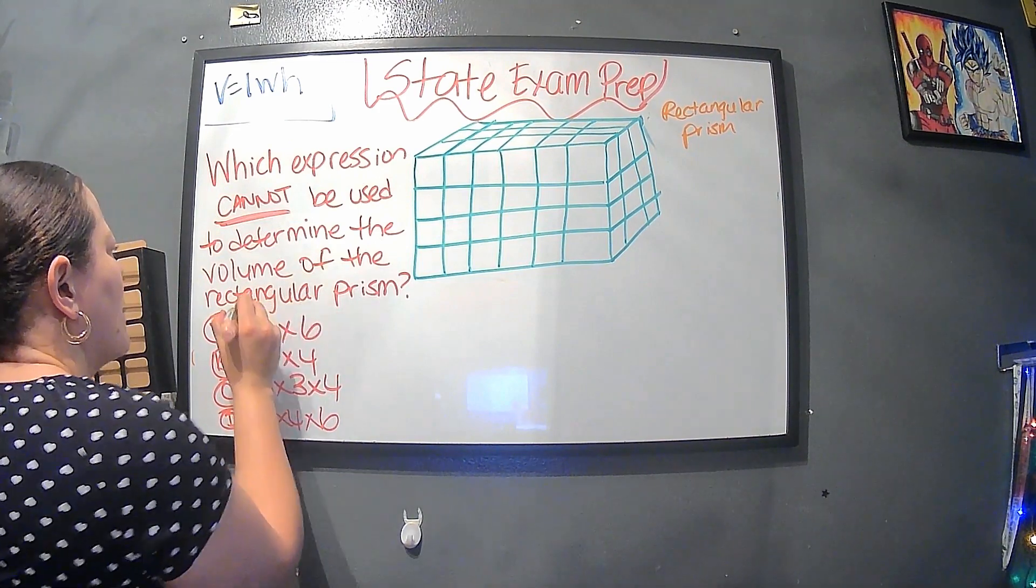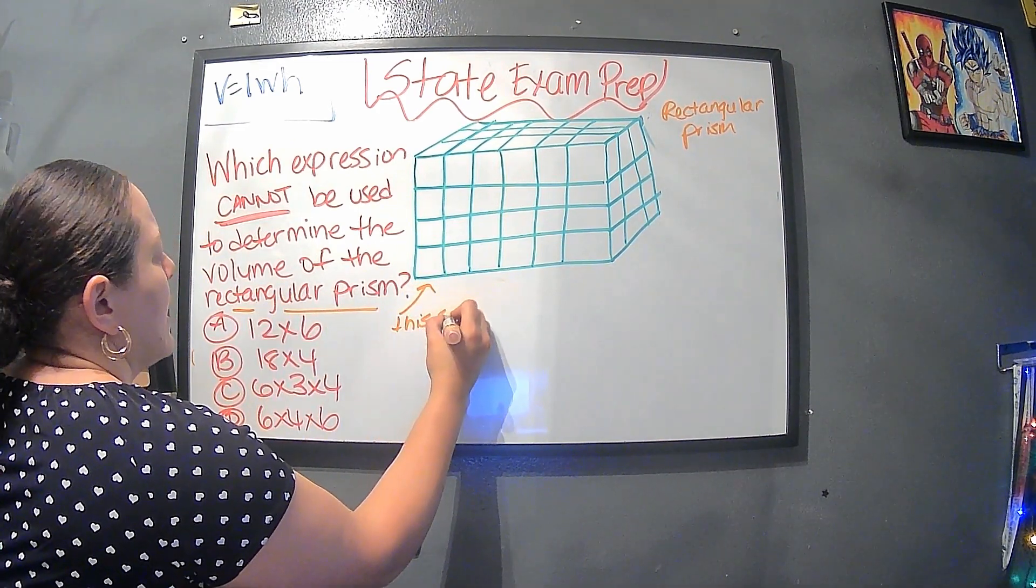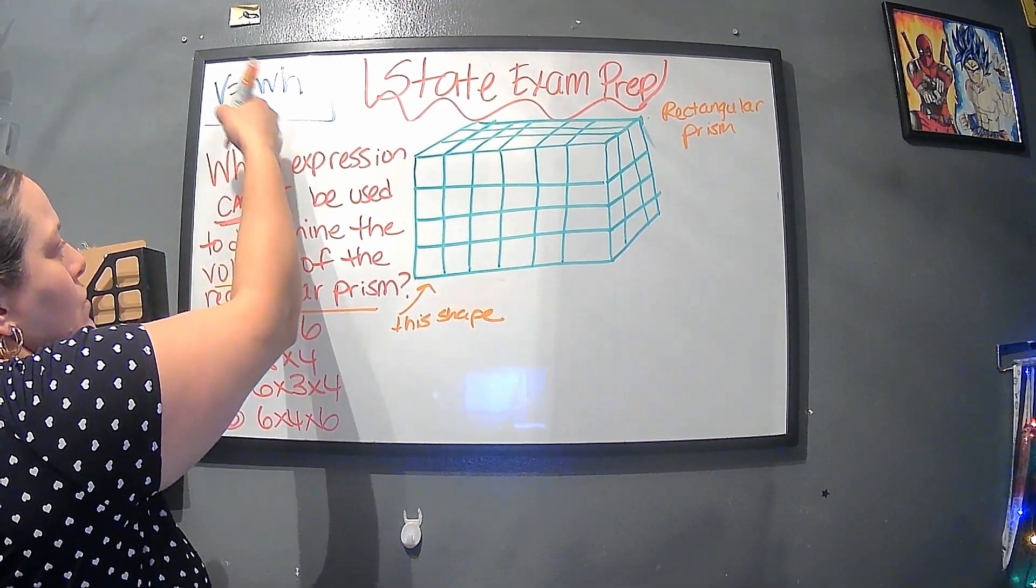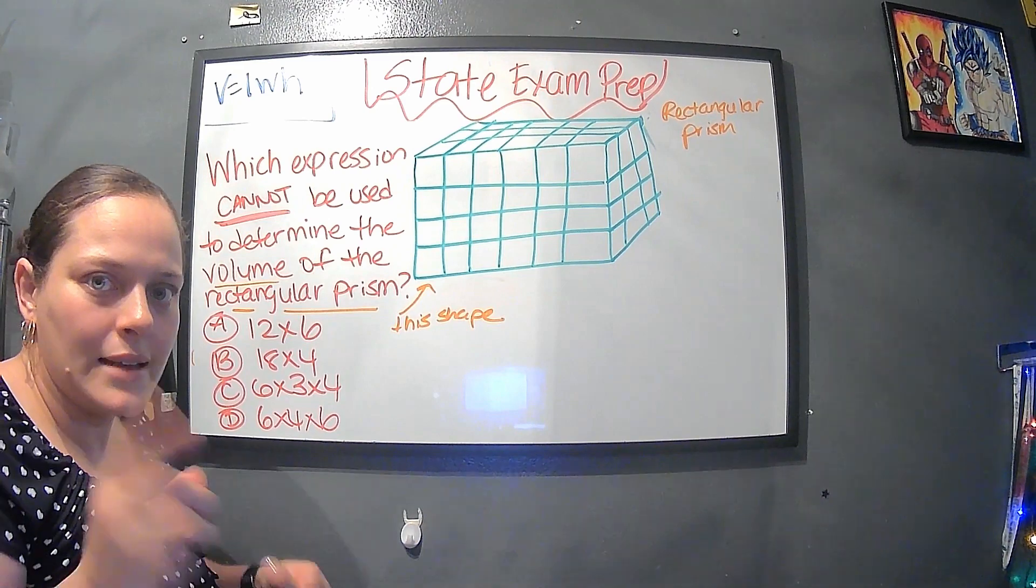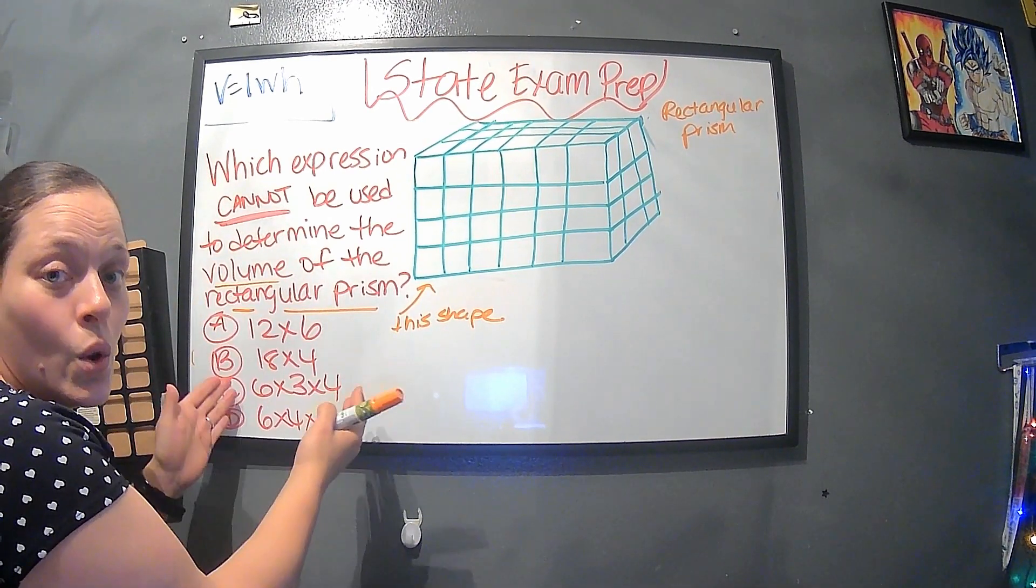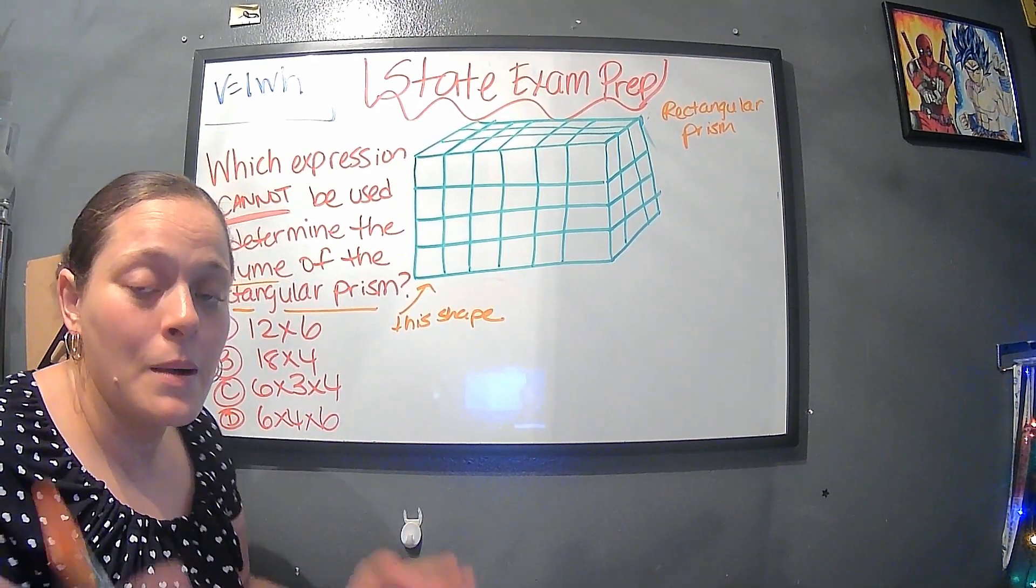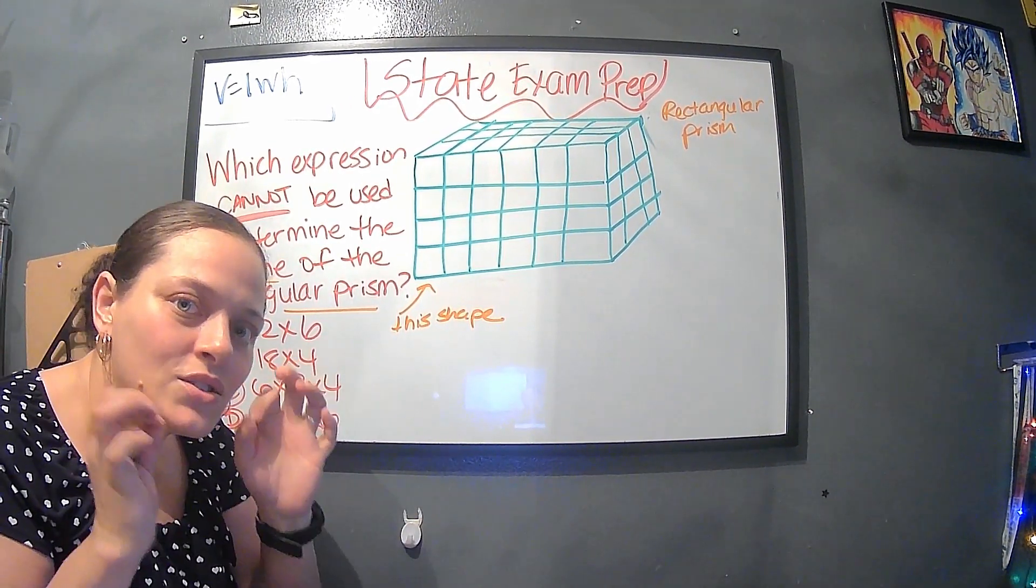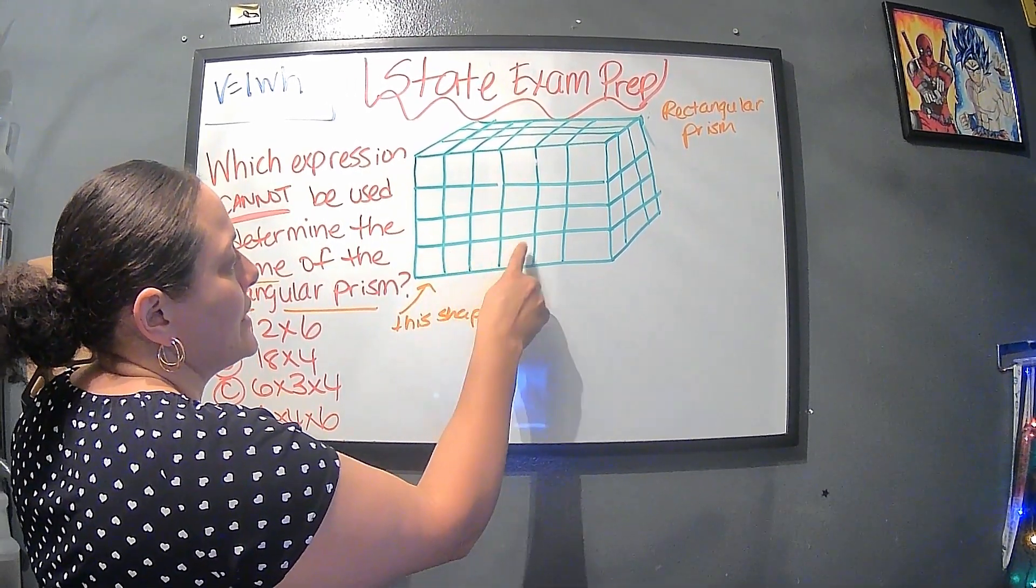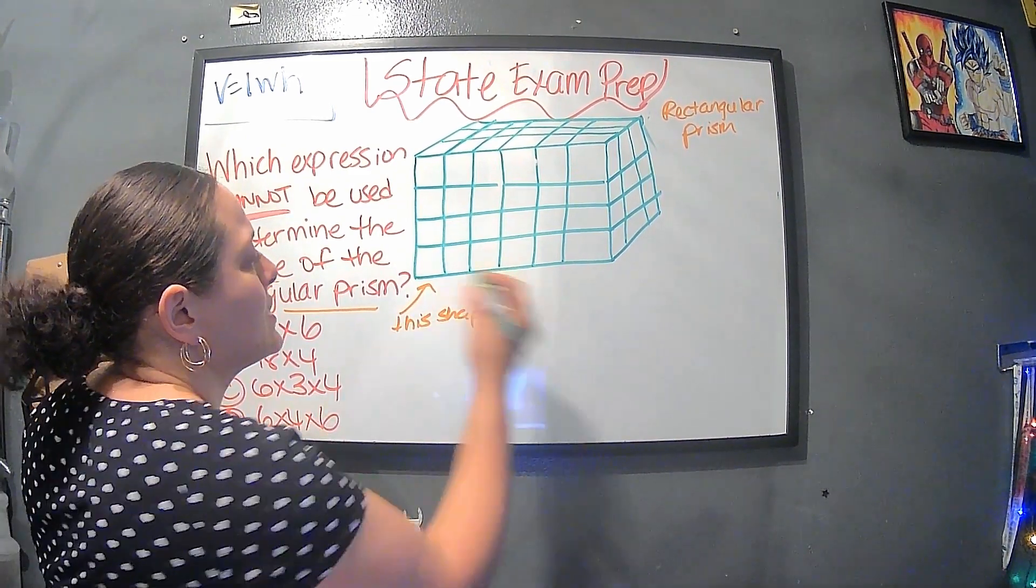Which expression cannot? That means we have to find the answer that it's not. Be used to determine. Well, I don't remember what determine means. Let's skip over that and keep reading to see how we could figure out what this means. This is for situations where sometimes you'll forget definitions. Then volume of the rectangular prism. Well, I remember a rectangular prism and that's this shape. And volume means length times width times height. So now with this one, it may mean that I need to know which of these will not help me get the volume. Remember it's the opposite. That always is very tricky. If we count this, it's one, two, three, four, five, six.